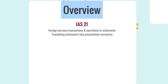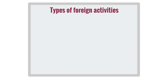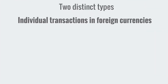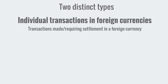IAS 21 distinguishes between different types of foreign activity. One of those types is an individual transaction in foreign currencies — one that has been made in a foreign currency or requires settlement in a foreign currency. Examples include the purchase or sale of goods or services where the price is denominated in a foreign currency, any borrowing or lending of funds denominated in a foreign currency, or the acquisition or disposal of assets denominated in a foreign currency.